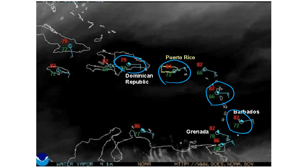Rare exceptions do occur when water vapor from the lower troposphere does appear on water vapor images. That can sometimes occur when columns of air are extremely dry and there's not enough water vapor in the middle or upper troposphere to absorb emissions from water vapor near the surface or from the tops of low clouds. But typically, indications of water vapor near the surface or low-topped clouds do not appear on water vapor images.